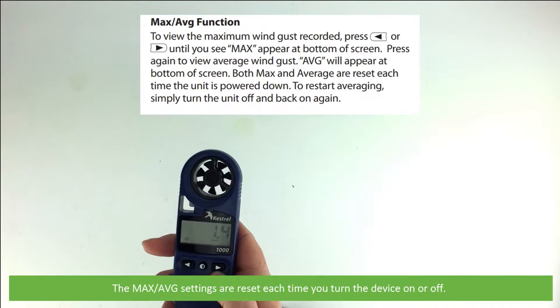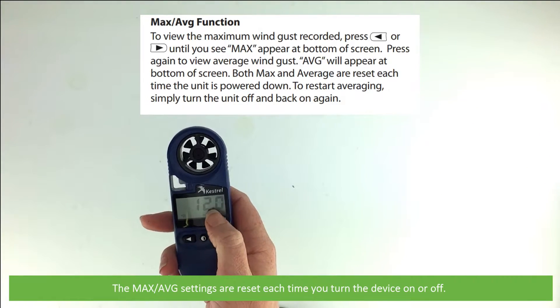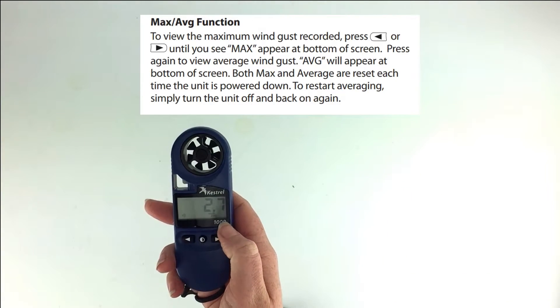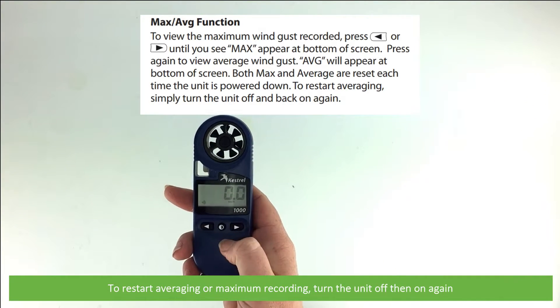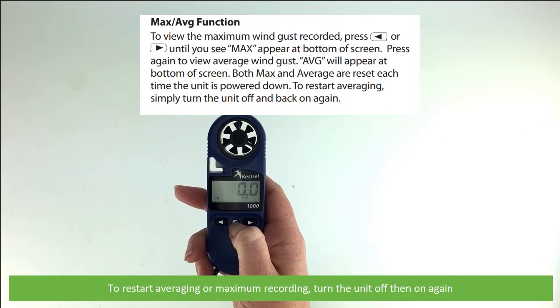The maximum and average settings are reset each time you turn the device on and off. To reset averaging and maximum recording, turn the unit off and on again.